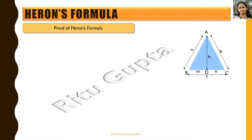We have this triangle here with given sides A, B, and C. We drop a perpendicular from vertex A to the side BC and call it height H. This perpendicular AD divides BC into BD, which is equal to M, and DC, which is equal to N.